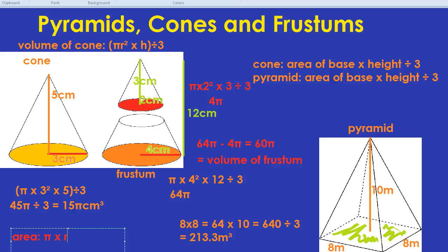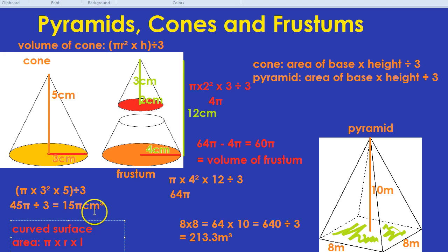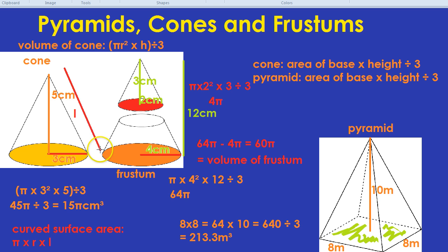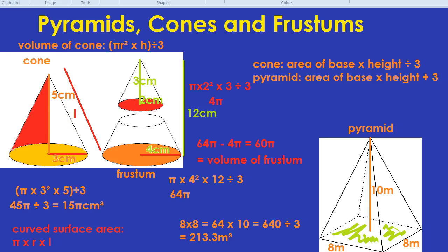Now, we haven't talked about L. What is L? L is the slant length — not the height, which is very different. It's the length going across the slanted side of the cone. And if you want the curved surface area, you use pi times r times L.